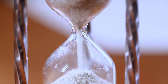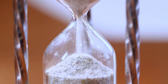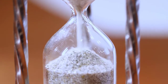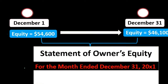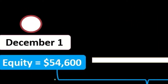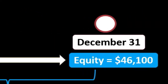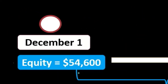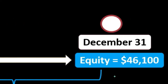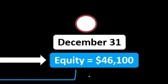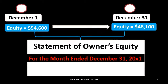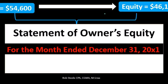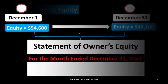Note that in this case, equity actually went down. We had beginning equity of $54,600 and we ended at $46,100, so we need to see what happened in the interim in terms of decreasing the total equity.